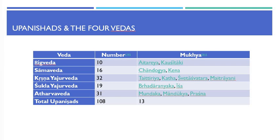For instance, Aitreya and Kaushitaki Upanishads are associated with the Rigveda, in addition to 8 other non-Mukhyaya Upanishads. Chandogya and Kena are associated with Samaveda, in addition to 14 other non-Mukhyaya Upanishads. Taithriya, Katha, Shvetashvara, and Maitrayana are associated with Krishna Yajurveda, in addition to 30 other non-Mukhyaya Upanishads.